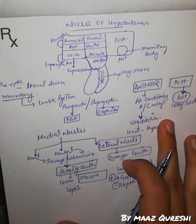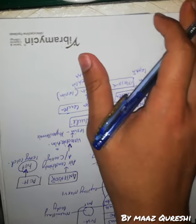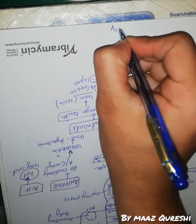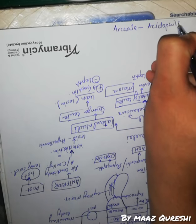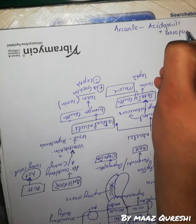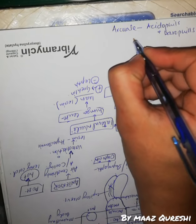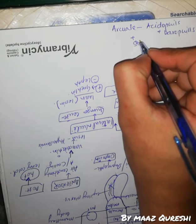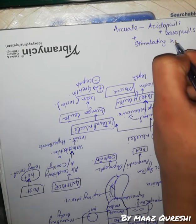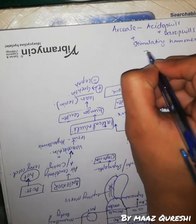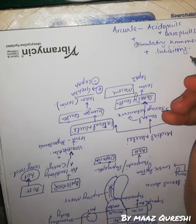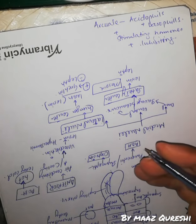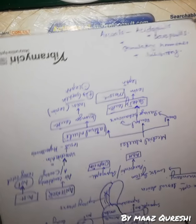Coming to the arcuate nucleus — the arcuate nucleus releases stimulating and inhibiting factors for acidophils and basophils, which act on the capillary plexus and connect to the posterior pituitary.